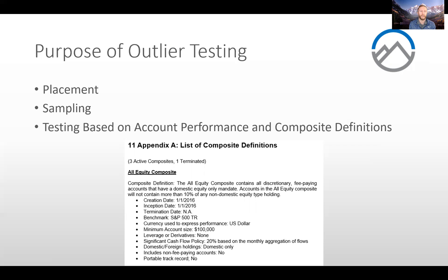If all accounts are performing very similarly in a given period of time across various composites, your sample for outlier testing may be very small or non-existent. However, if it's covering a period of more dispersion and volatility in the market, we'd likely expect to see more outlier accounts come up, hence a larger sample size during periods of more outlier performance. The testing is very focused on the actual data provided to the verifier and the policies and procedures for how composites have been built out in Appendix A, as well as some light touches on the definition of discretion.